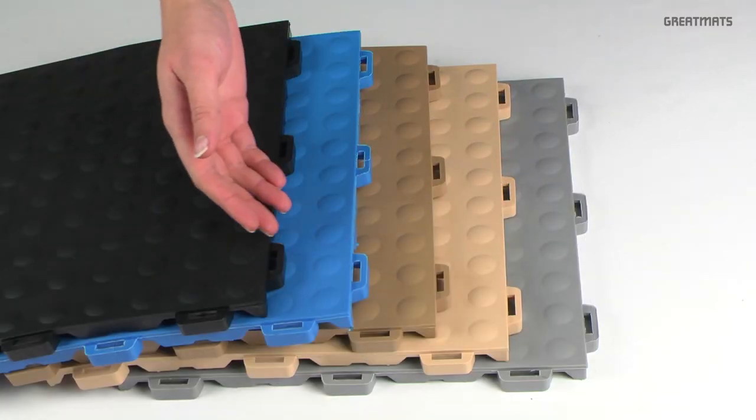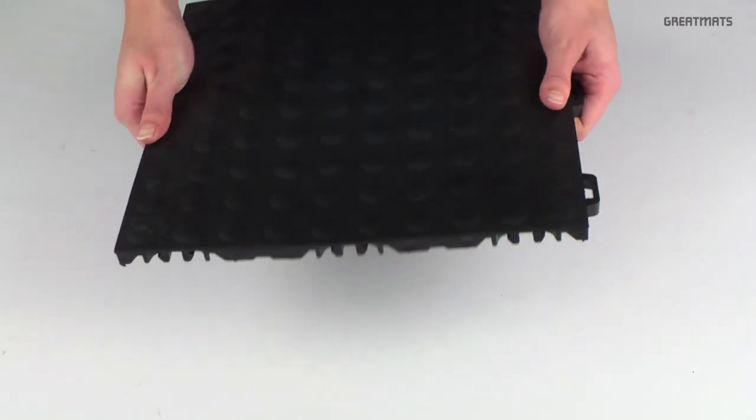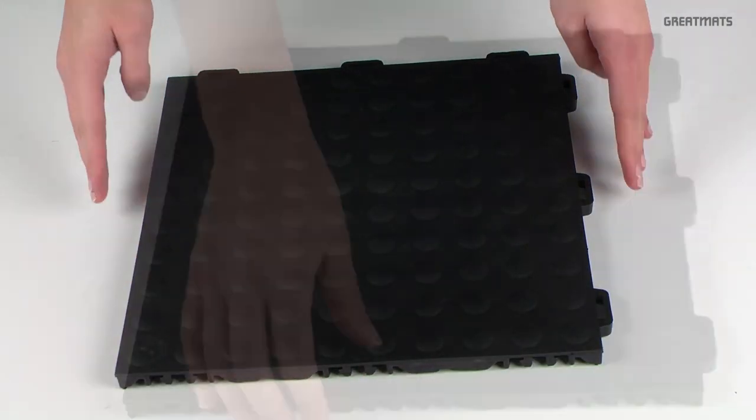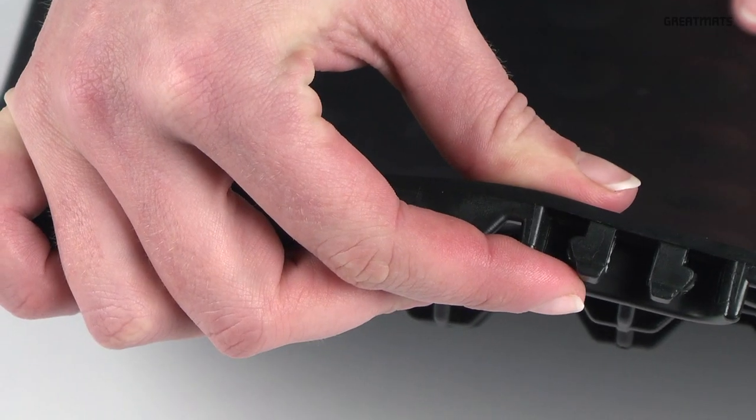Available in 5 different colors, this flexible PVC ergonomic floor tile is 1 by 1 foot in size and offers over a half inch of cushion over hard flat surfaces.